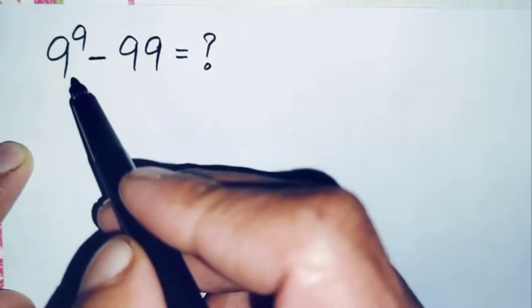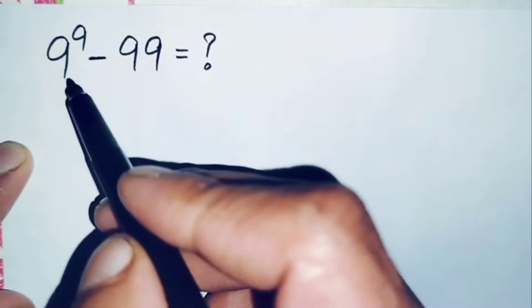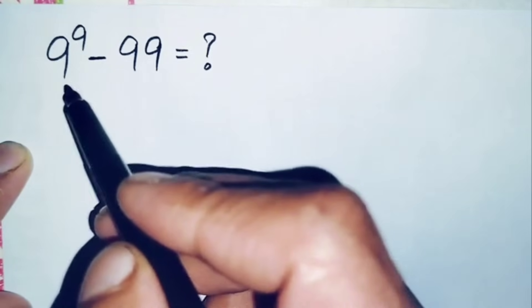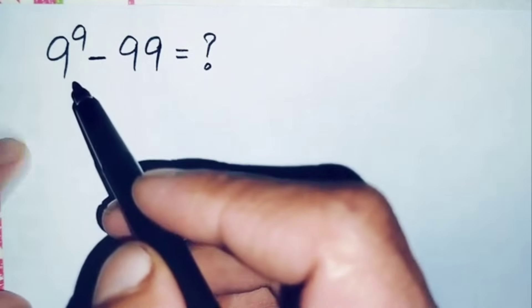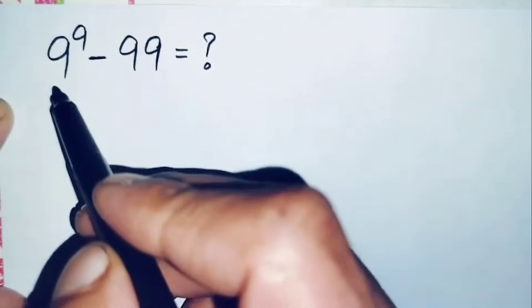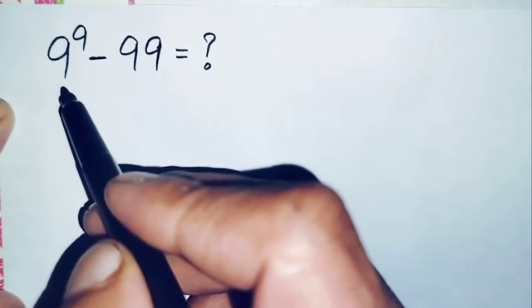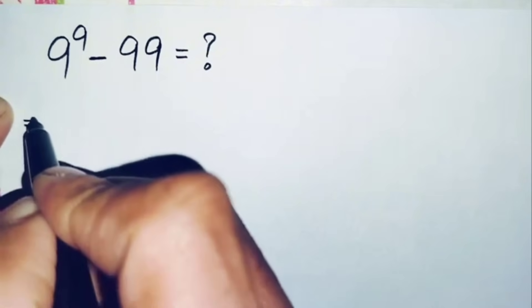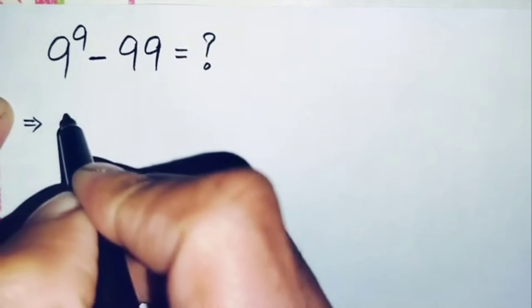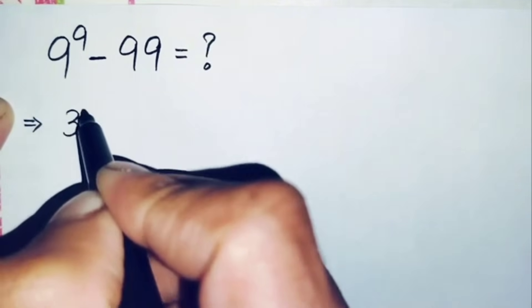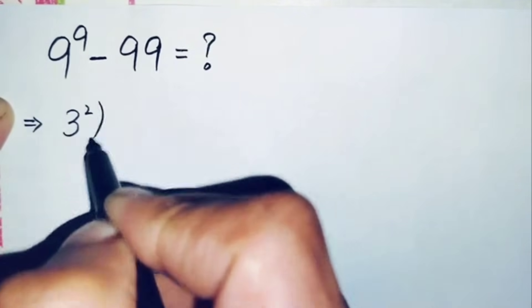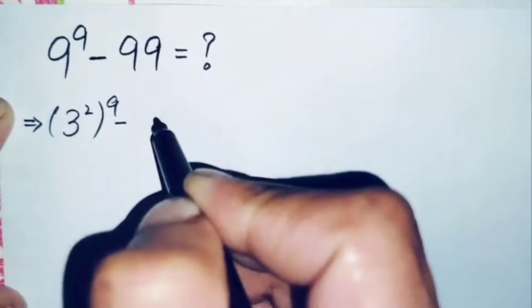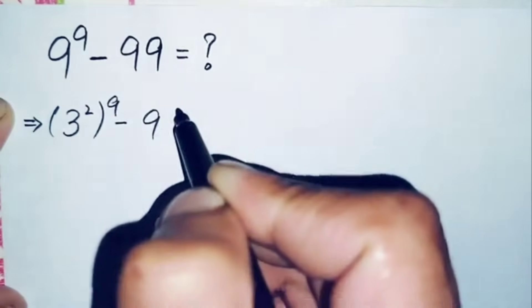First of all, we will try to find the value of the term 9 to the power 9. We will change 9 to its exponential form, so we can write 9 as 3 squared, giving us (3²)^9 minus 99.